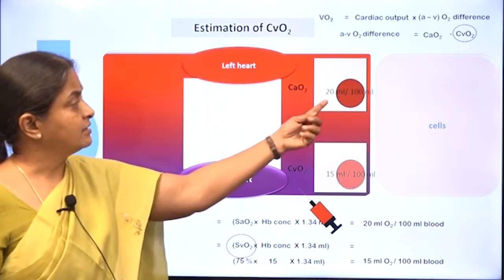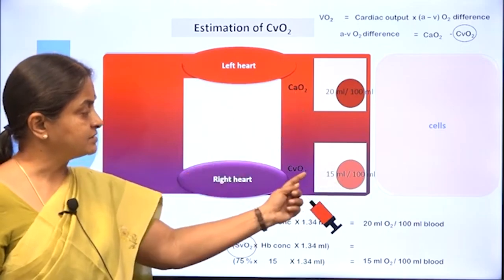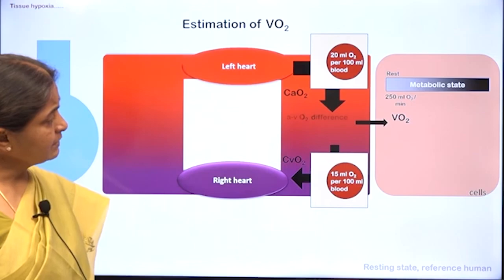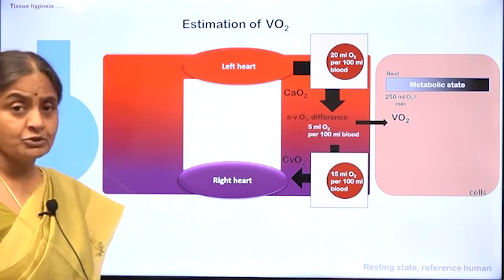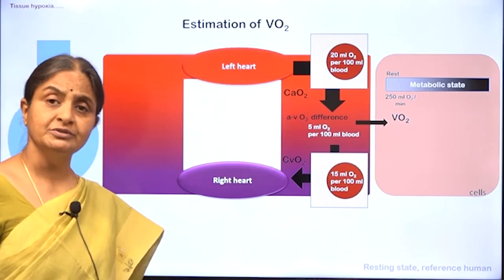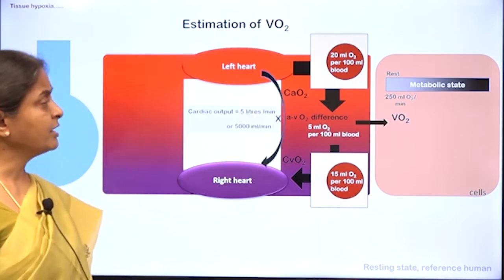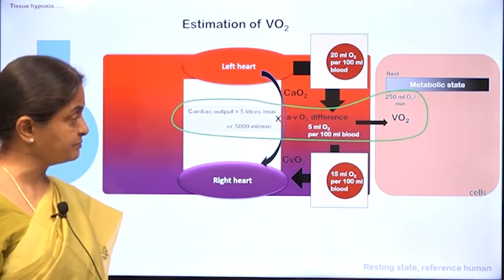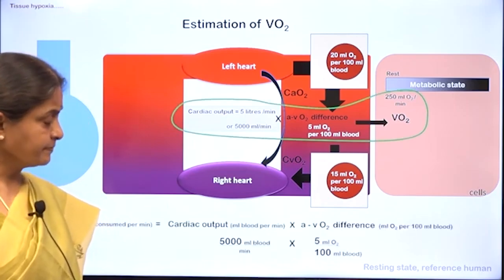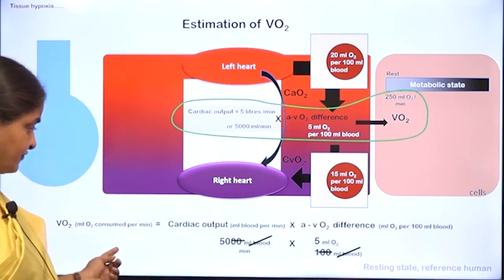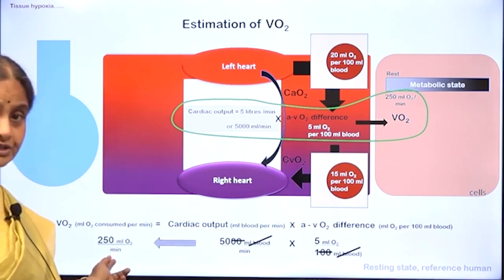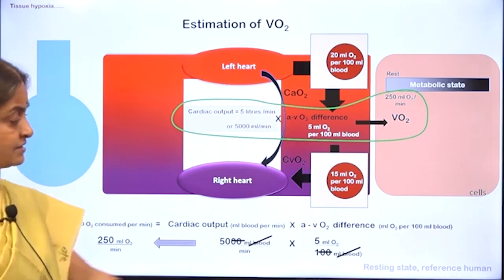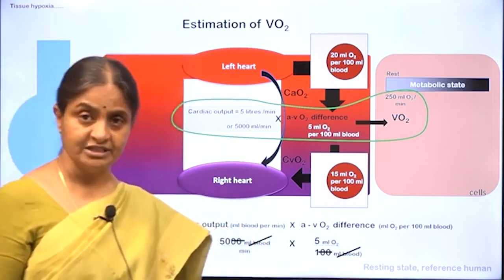Arterial oxygen content is 20 ml per 100 ml and venous oxygen content is 15 ml per 100 ml. The arteriovenous oxygen difference is therefore 5 milliliters per 100 ml of blood. Multiplied by cardiac output of 5,000 ml per minute, this gives 250 ml of oxygen consumed per minute — the resting state value in a reference individual.